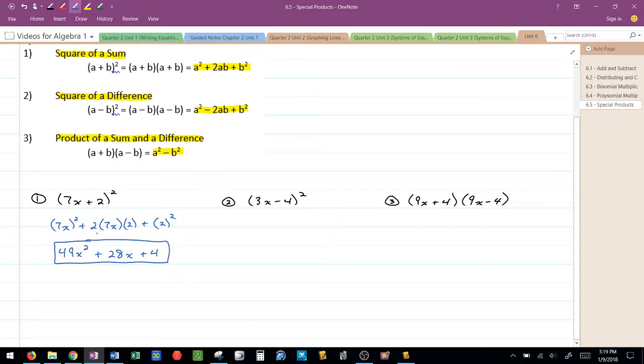I can always go back and multiply, write it out as 7x plus 2 times 7x plus 2, and multiply those binomials using binomial multiplication.